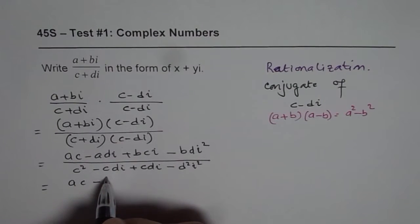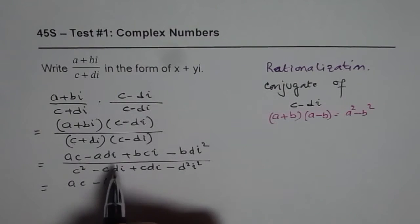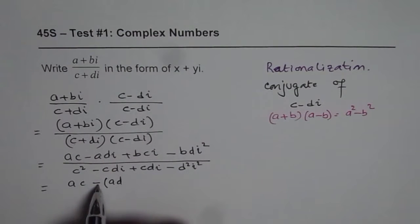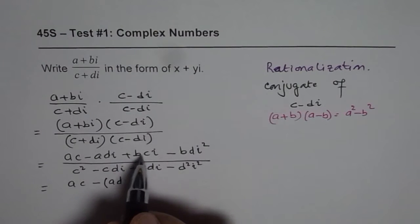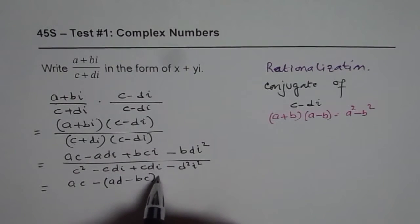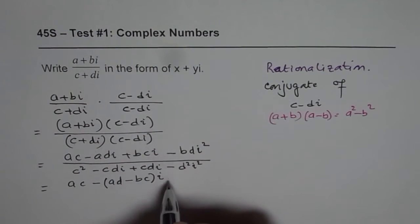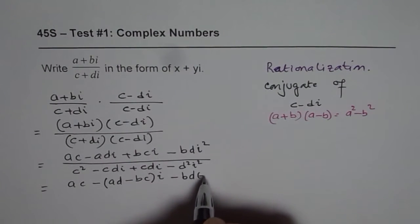When we combine these terms, ad, I am taking minus outside, so it becomes minus bc, i is common. And here i square is minus 1, so let me write this as bd times minus 1.